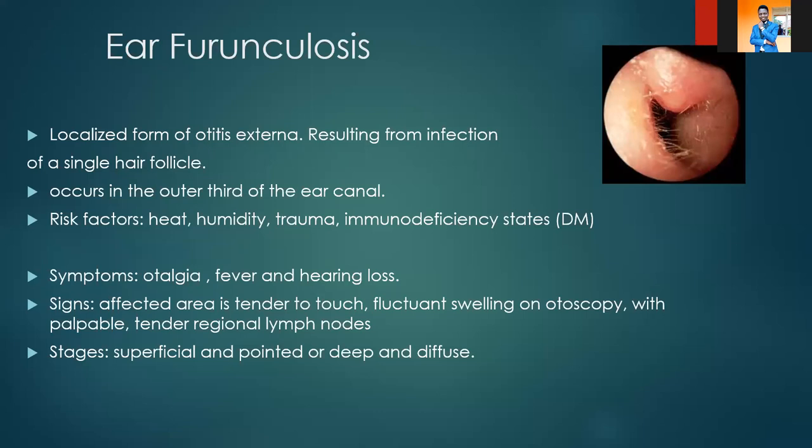It occurs in the outer third because we know the outer third is the cartilaginous part, which is also lined by skin, and the skin contains hair follicles. So those hair follicles in the outer third of the external auditory canal can get infected, and they give you what we call a furuncle. Risk factors include heat, humidity, trauma, and immunodeficient states like diabetes mellitus.